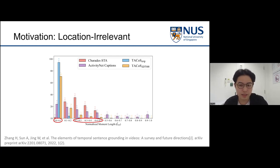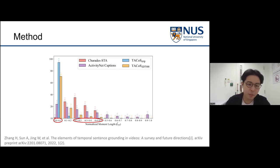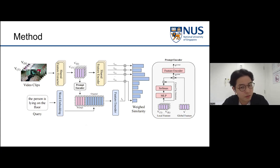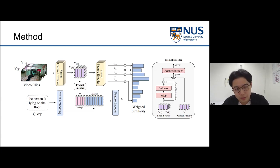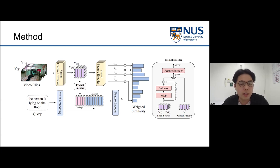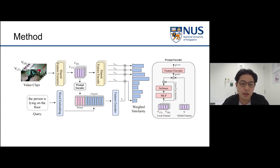In later experiments you'll see how state-of-the-art methods experience severe performance degradation on synthetic datasets even when the video moments aren't changed at all. To tackle the problem of location relevance, our architecture starts with a series of parallel pipelines. A video is divided into several video clips and a pre-trained video-text model calculates the similarity between the text description and each clip. Since these pipelines are independent, the model captures local features, and an additional prompt encoder is introduced to capture global features.